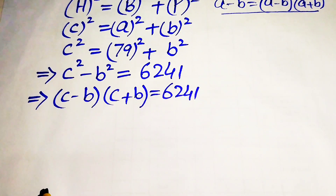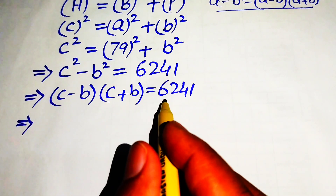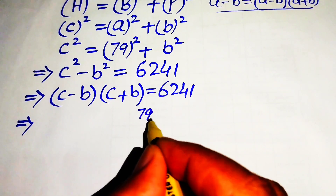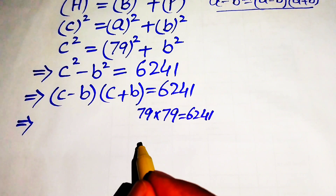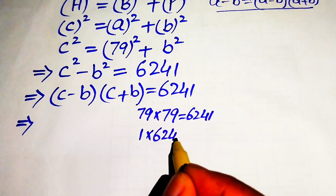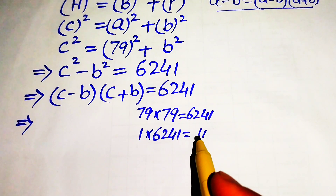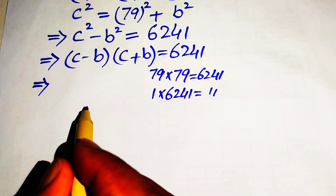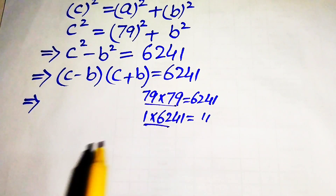On the left side we have two factors multiplied together, so we convert the right side into a product of two factors. We know 79 × 79 = 6241, and also 1 × 6241 = 6241. These are the two possibilities, giving us two cases to compare with the left-hand side.